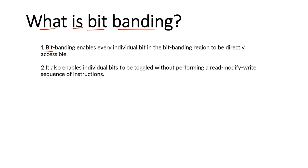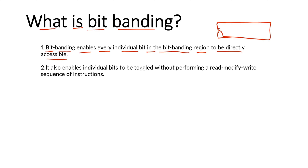Bit banning enables every individual bit in the bit banning region to be directly accessible. In our memory map, one particular region is allocated to bit banning. In that region, you can enable every single bit for reading and writing. In general, you can't access a single bit of memory — if you want to access memory, it's possible to access only eight bits, that is one byte, by using a memory address.